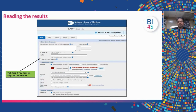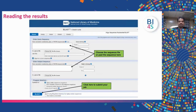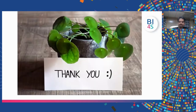If you want to align two sequences, you can click the align two sequences option, provide the first sequence, enter the second sequence, and click BLAST — you will then see the similarities between the two sequences. That's all, thank you.